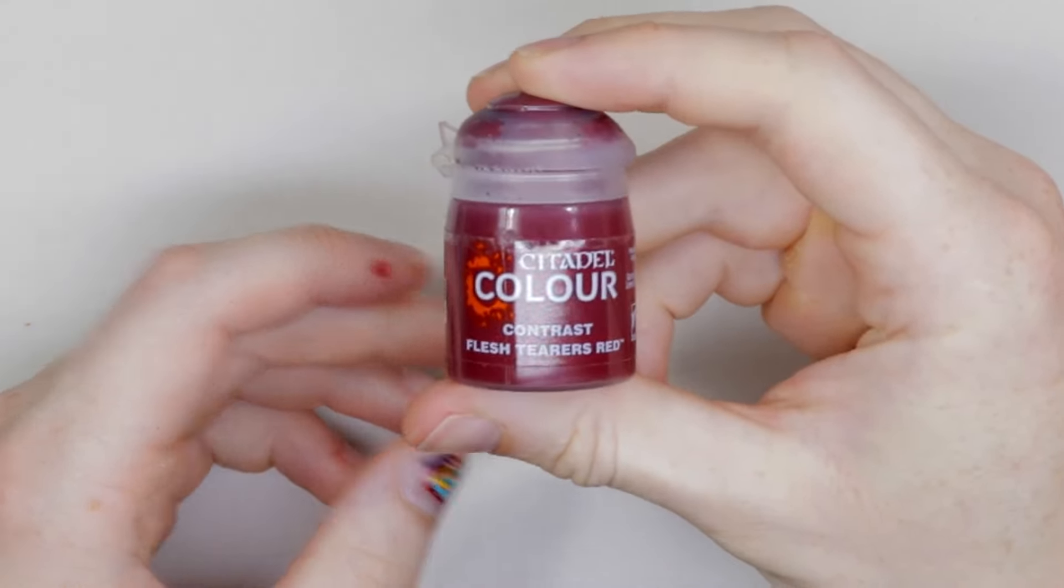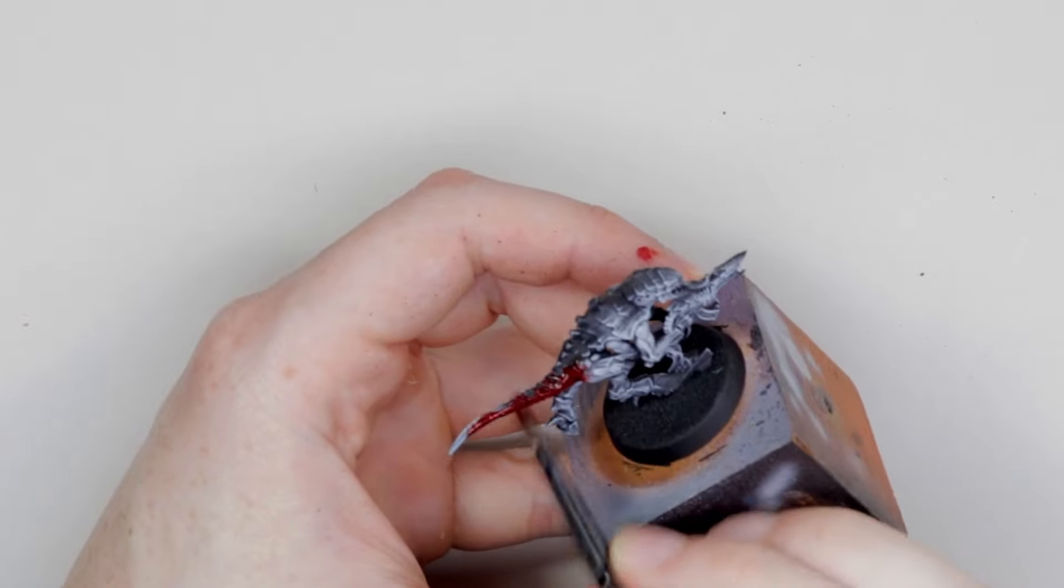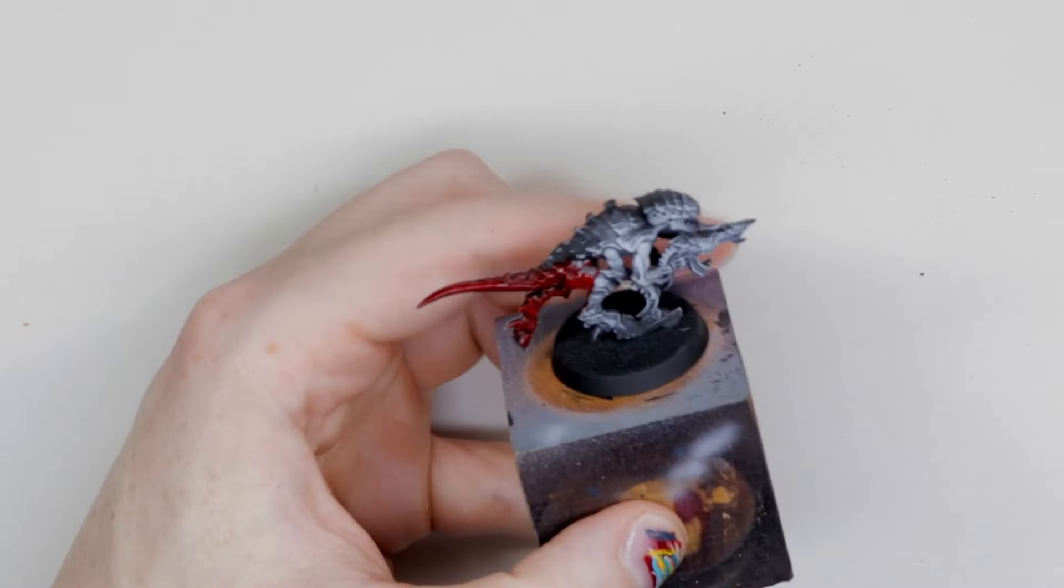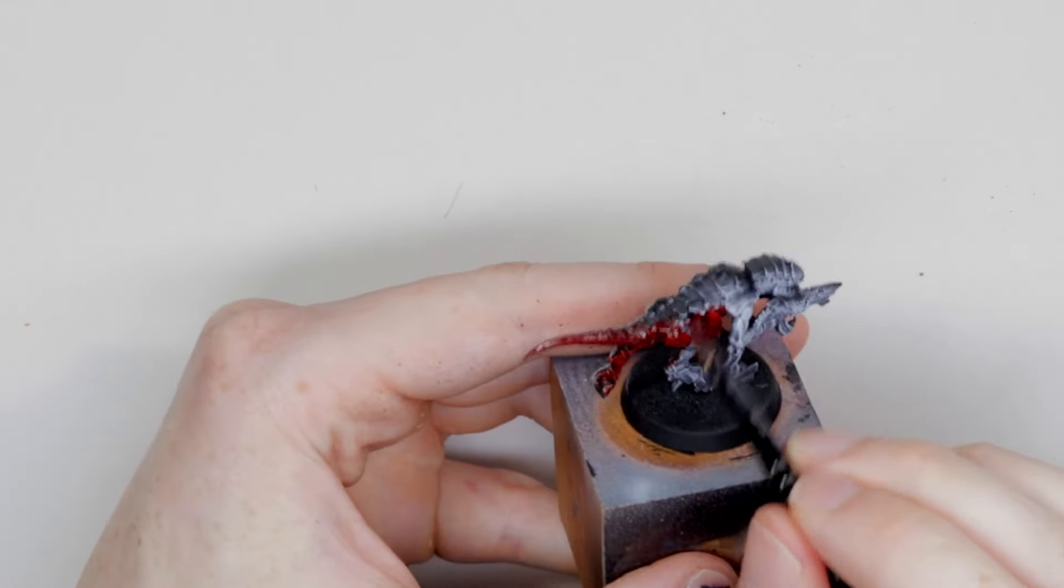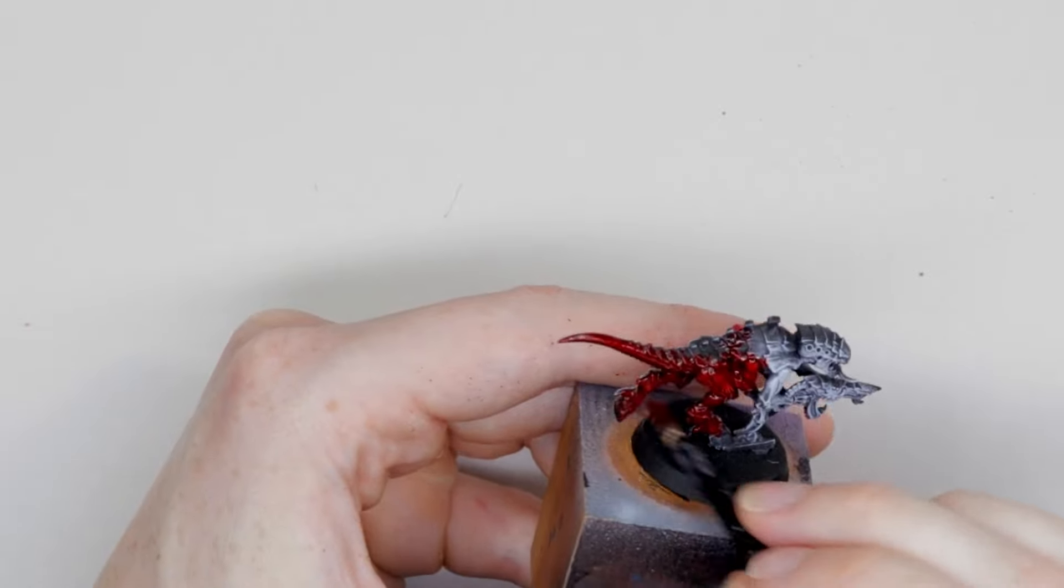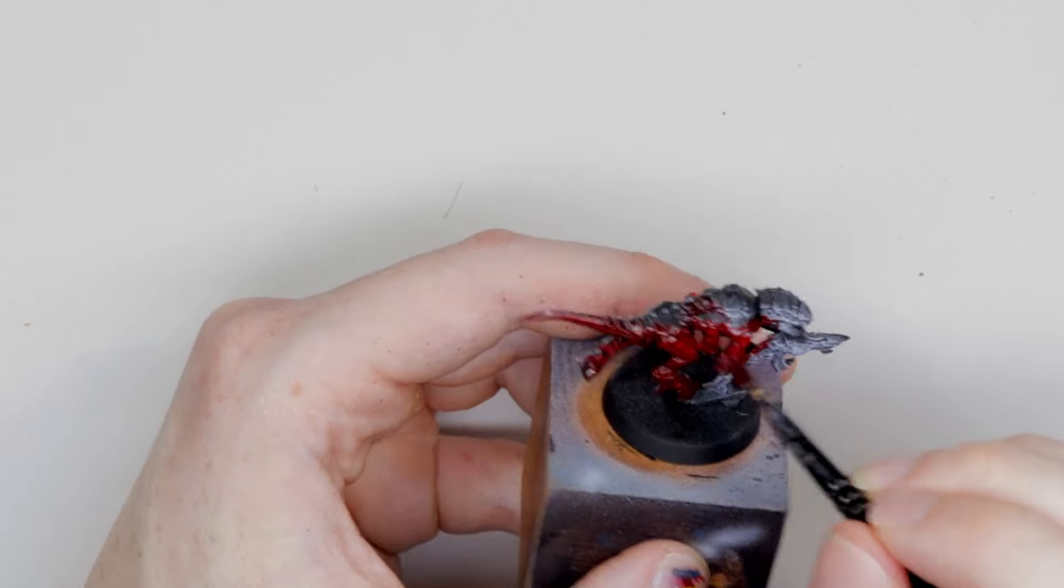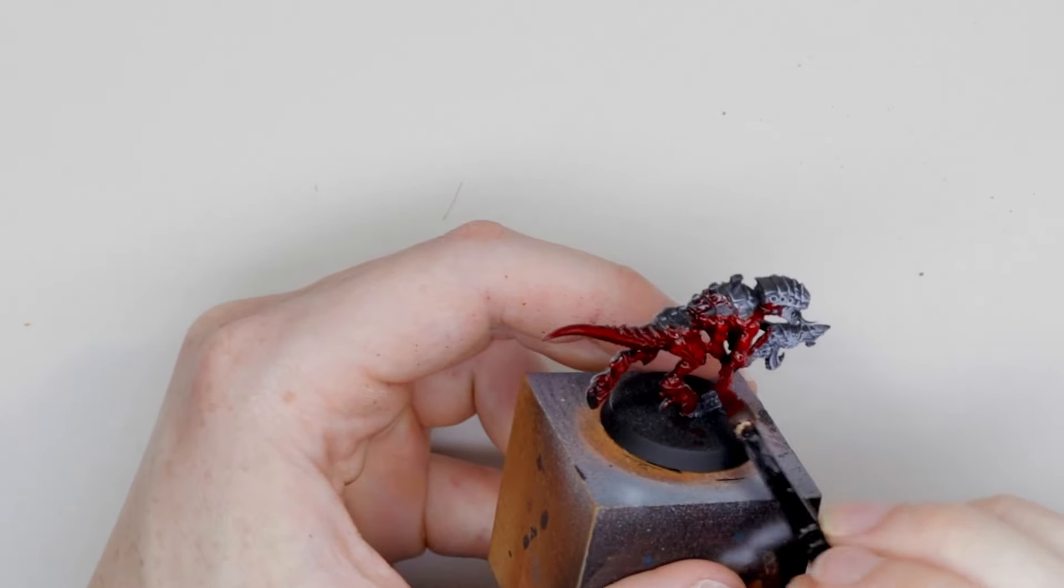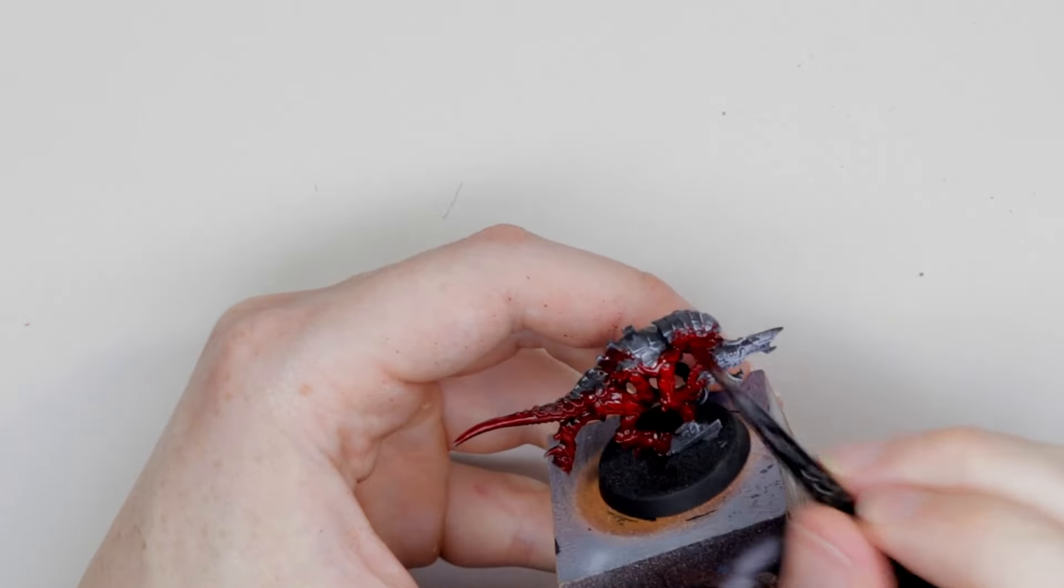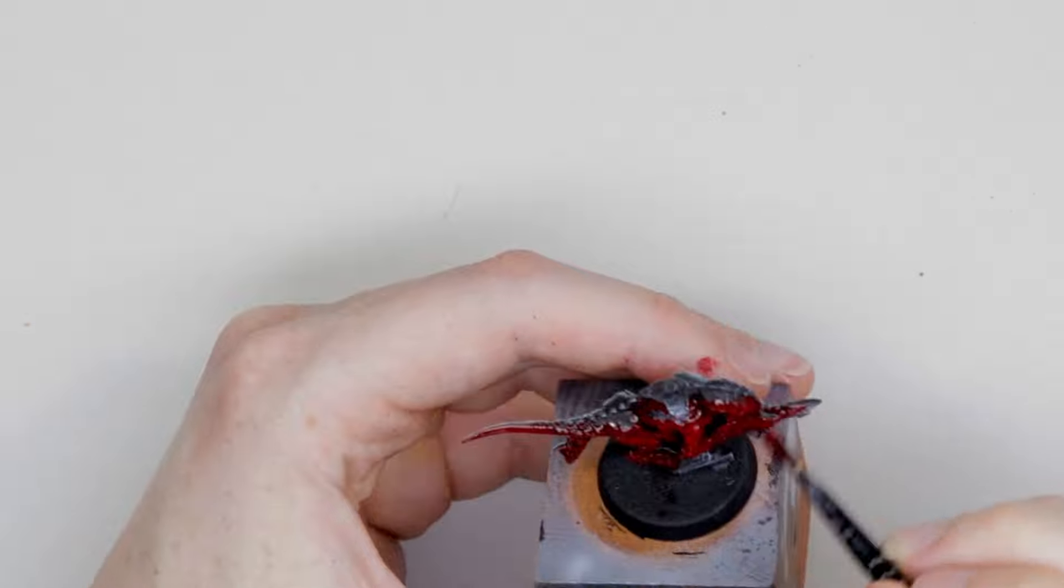It's very easy for red to look flat, so by doing this dry brush over black, we're going to give our contrast mediums a lot to work with in terms of picking out that color but also keeping the shadows distinct. Once you finish that, I'm going to pick up Flesh Tearers Red, my favorite of the contrast paints. It's such a brilliant red with a lot more brown in it than Mephiston Red or Blood Angels Red, so it's got that sort of deep blood color. We're just going to put this all over the flesh of the model.